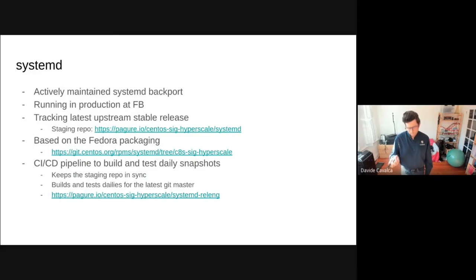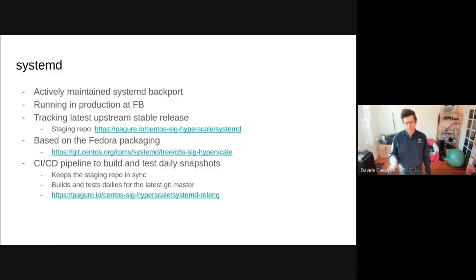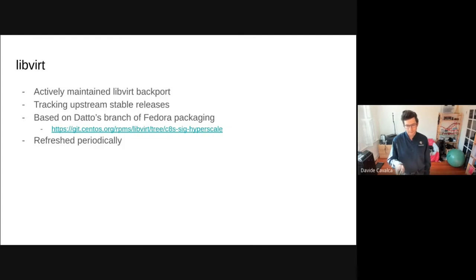A good example is systemd. Over the years, Facebook had maintained a systemd backport on GitHub because they always ran the latest systemd stable release instead of the version packaged in CentOS proper. However, that made it very difficult for people to consume. All of this development is now done within the SIG — we have a repository on Pagure that tracks the latest systemd release, the packaging is maintained on git.centos.org alongside official packaging, and we have a CI/CD pipeline that rebuilds systemd from GitHub master daily and alerts us of any issues. Another example is LVM, which Neil runs at Datto in production, maintained the same way, tracking the latest upstream stable release.